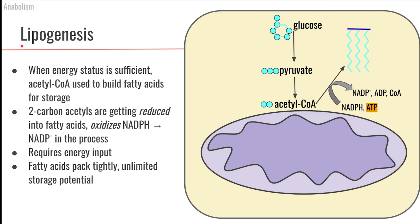So when energy status is sufficient in the body, we are going to want to take some of that energy and store it for later. Let's say we started with glucose and went through the steps of glycolysis. We generate some pyruvate, we generate some acetyl CoA. But our body has enough energy right now, so we don't want to send that acetyl CoA through the Krebs cycle to the electron transport chain — we just don't need to generate more ATP right now.